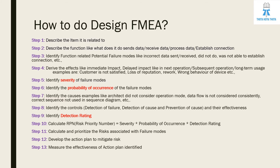Examples of effects include customer dissatisfaction, OEM dissatisfaction (if we are a supplier), loss of reputation, inability to receive payment, need to rework, or wrong behavior of the device installed in the car. Step five is to identify severity of failure modes. Step six is to identify probability of occurrence. Step seven is to identify causes — for example, architect did not consider a particular operation mode, data flow not considered consistently, mismatch in data flow, or incorrect sequence used in sequence diagram.